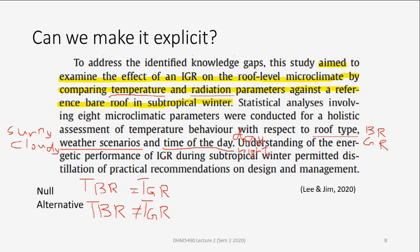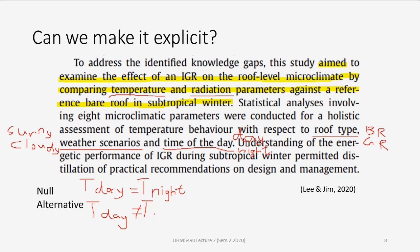Roof type is clearly bare roof versus green roof. Weather scenarios — sunny weather versus cloudy weather. Time of day — daytime versus nighttime. For example, the null hypothesis states that daytime temperature is not statistically different from nighttime temperature. The alternative hypothesis states that daytime temperature is statistically different (not equal) to nighttime temperature.